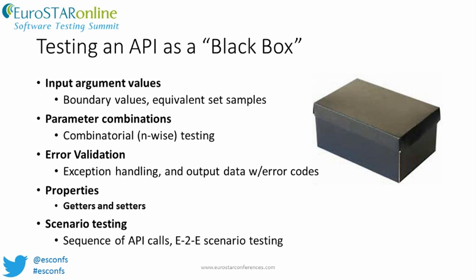We should also implement test cases based on output conditions. Verification of returned error codes or thrown exceptions is as important as returned values or state in API testing. The API signature should provide a list of errors or exceptions that may be returned by the API — for example, a false boolean condition, an HRESULT less than 0, a null pointer, or throwing an exception are common errors returned from an API called with invalid argument values. We should design tests to generate each error condition.